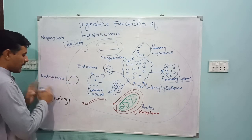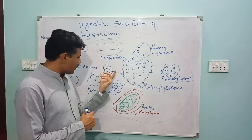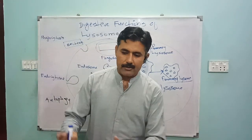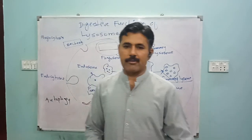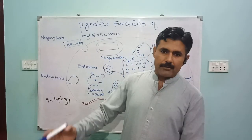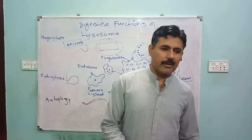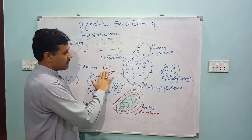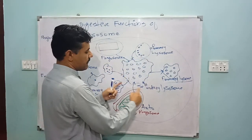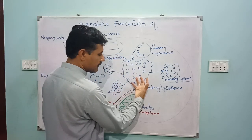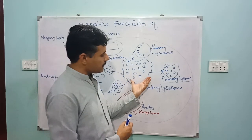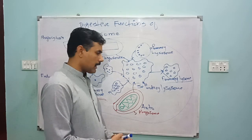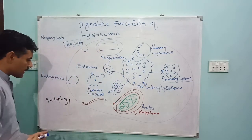Similarly, when food enters in the form of endocytosis, it forms a body called endosomes. Endosomes contain food in the form of liquid or solid. These endosomes also fuse with the primary lysosome, again forming a functional secondary lysosome. The secondary lysosome performs its function, and once digestion is complete, the structure can revert to a primary lysosome.